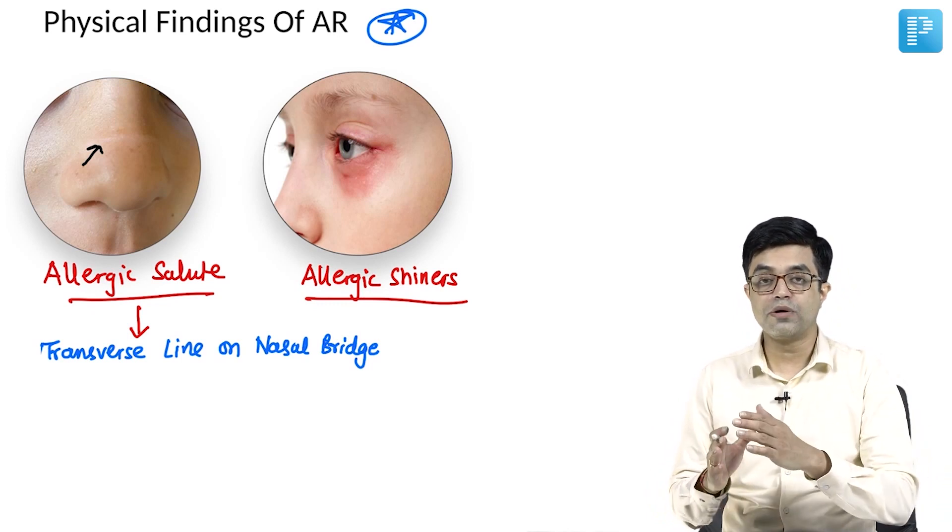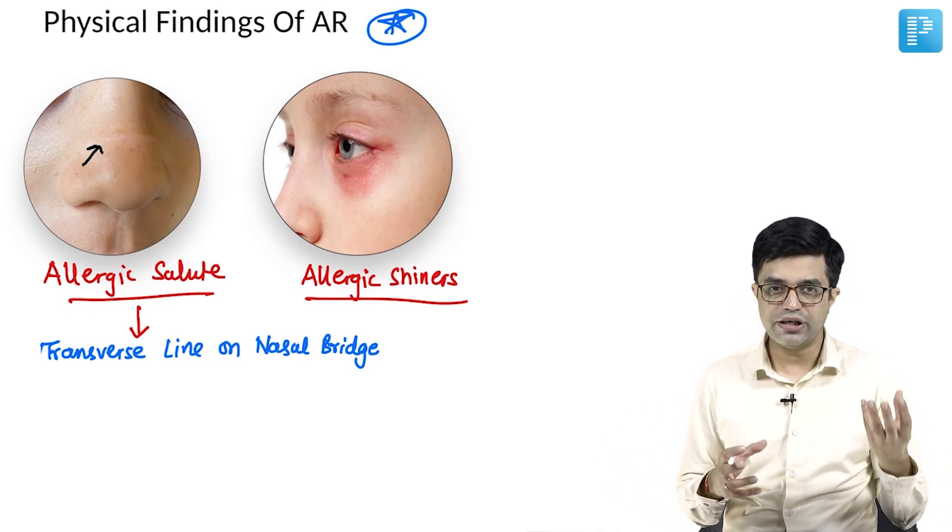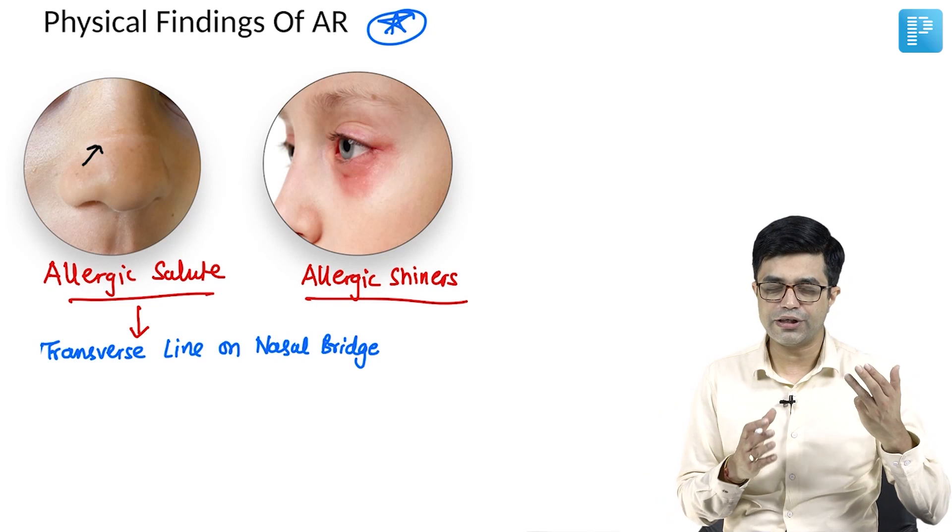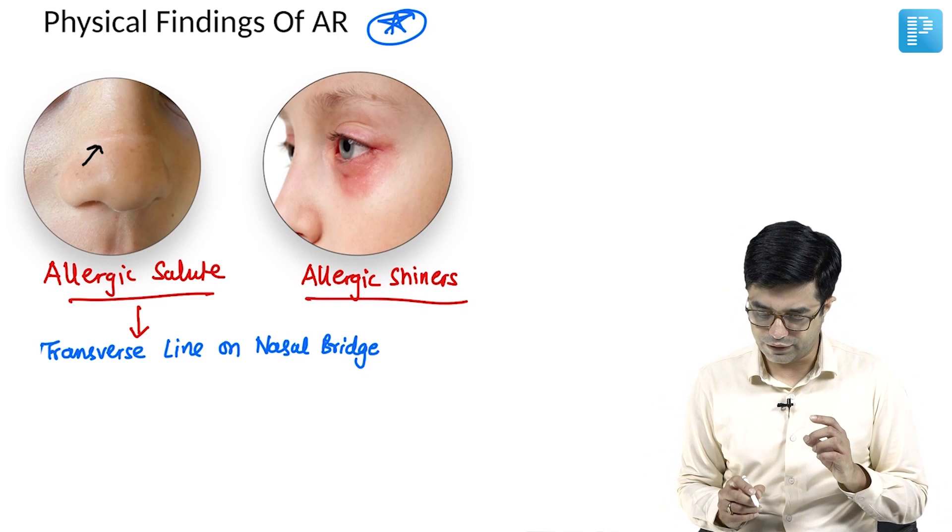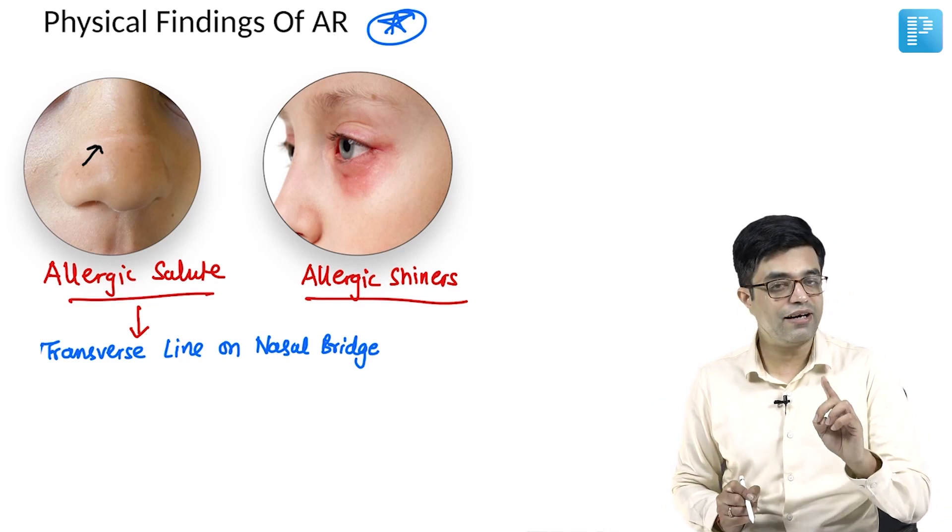In older children, it is more blackish in nature. In very young children, around 5-6 years of age, up to that age, you will find it to be more pink red than black in nature. So you will have allergic shiners which is the second physical finding.